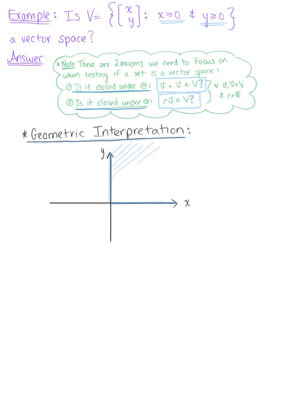And so the set V, as described here, is restricted to quadrant 1. And we'll go ahead and we'll incorporate some arbitrary vector u. So let's let this vector here be u defined by components x, y.